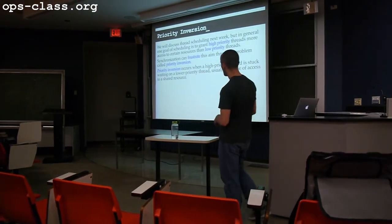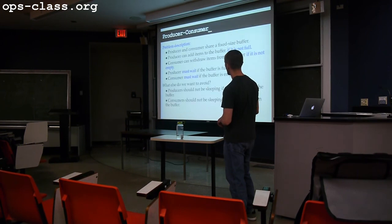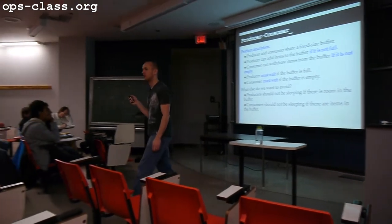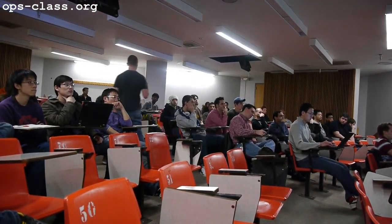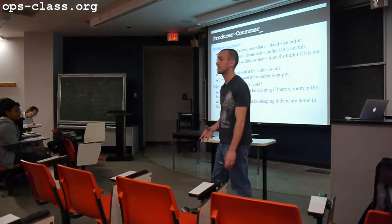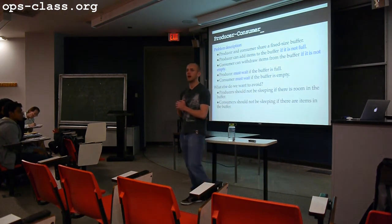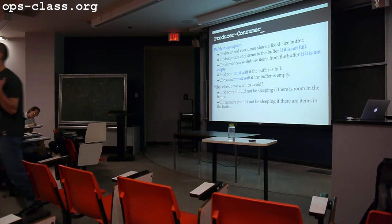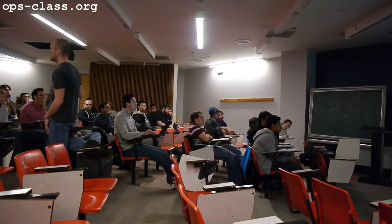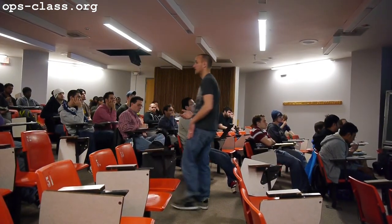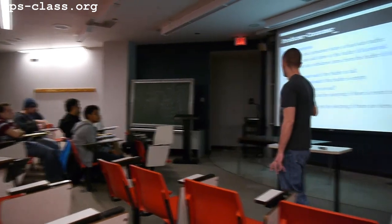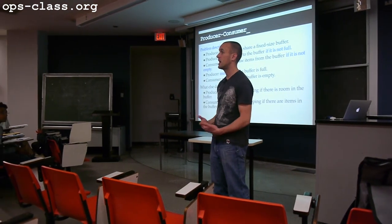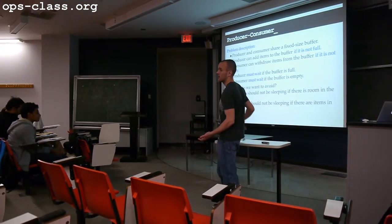I'm running behind, so I'll skip priority inversion — I'll record it so you can watch it online. Let's go through solving a producer-consumer synchronization problem using condition variables. I have some set of producer threads putting data into a buffer and a set of consumer threads withdrawing data. The producers and consumers share a buffer. If the buffer is full, the producer must wait. If the buffer is empty, the consumer must wait.